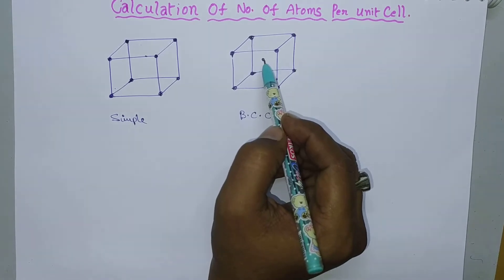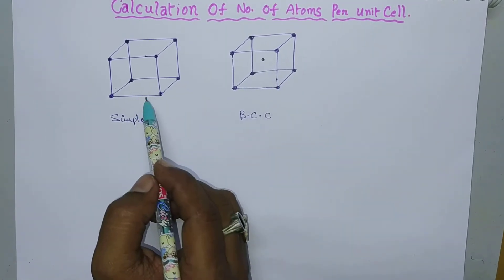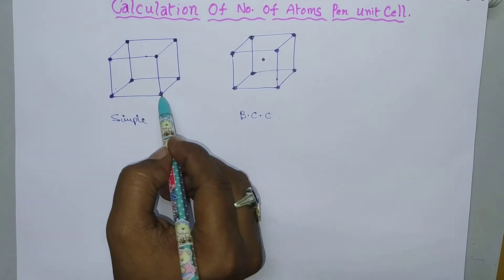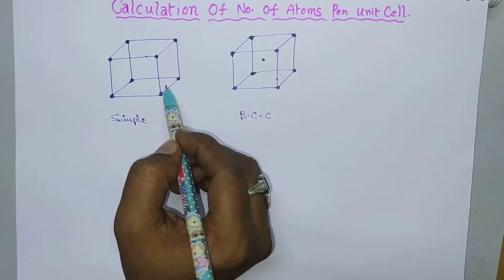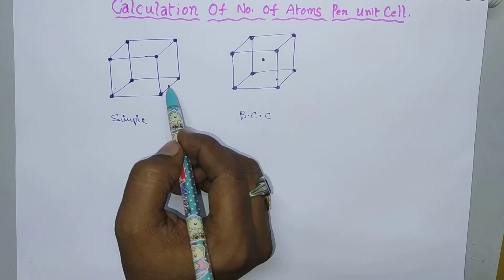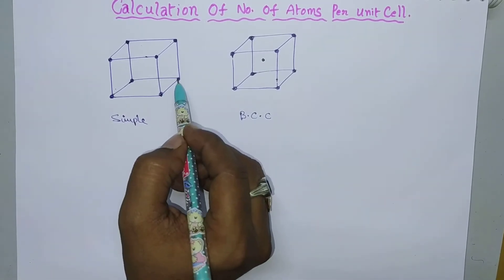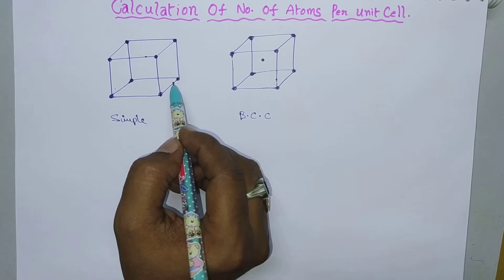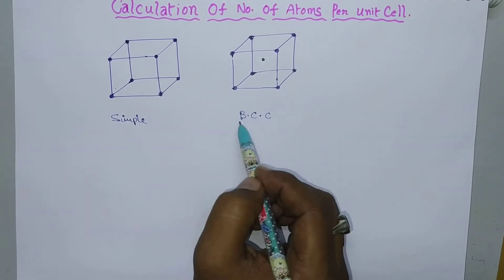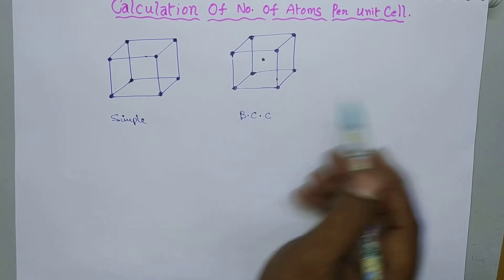Each lattice point consists of an atom or ion. If it is an ionic crystal, each lattice point consists of one ion. If it is a covalent crystal, each lattice point consists of an atom. This is the body-centered cubic unit cell.